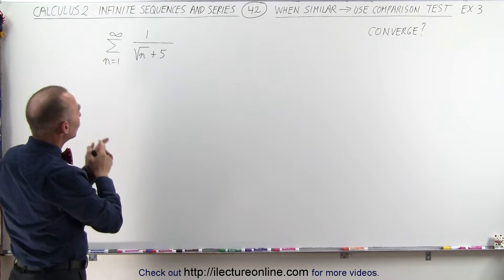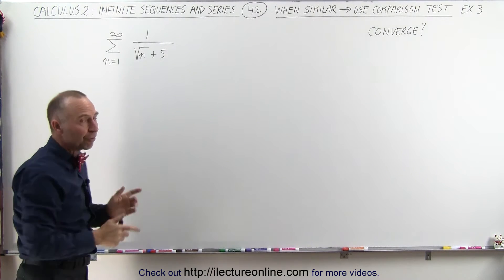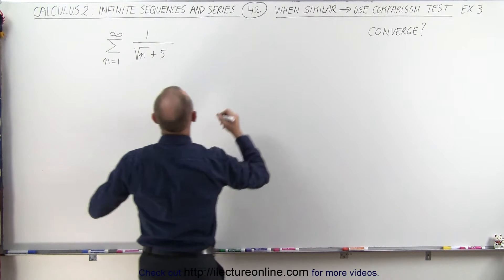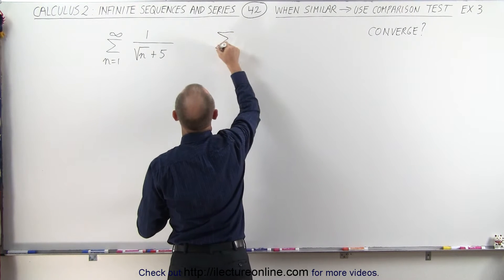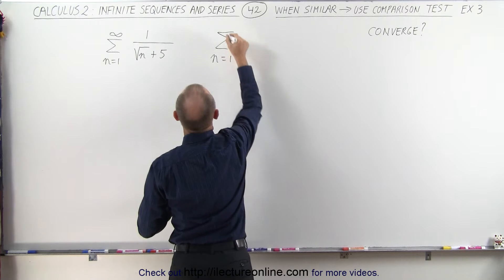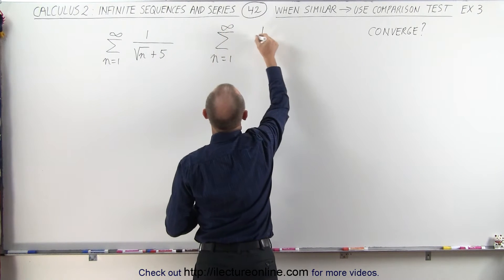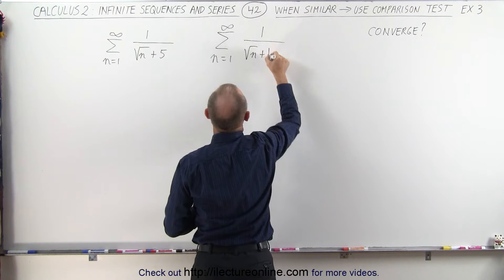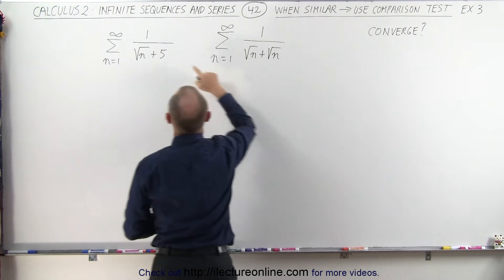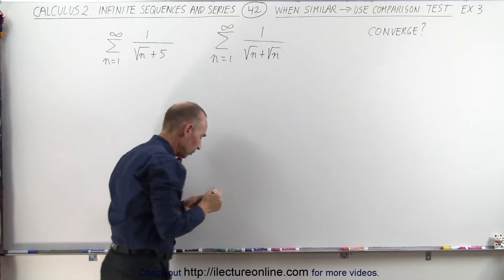What we could do is compare it to something that's very similar. Let's compare it to the infinite sum from n equals 1 to infinity of 1 divided by the square root of n plus the square root of n. So instead of 5 we replace it by the square root of n.